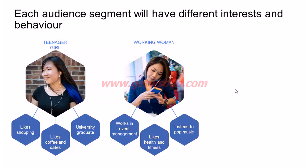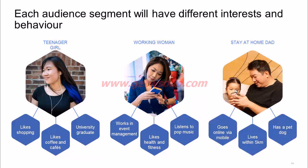The second example is a working woman who could work in an event management company, is probably a health and fitness enthusiast and listens to pop music. The third, the stay-at-home dad, accesses the internet through his mobile phone, lives within a five kilometer radius of the cupcake shop, and also has a pet dog. These unique interests, behaviors, and characteristics will not only help you reach them effectively through Facebook ad targeting, but will also help you craft the right messaging to strike a chord with this audience.